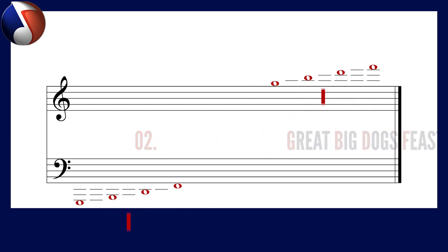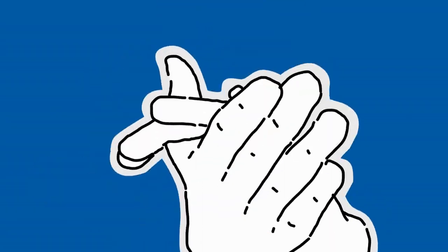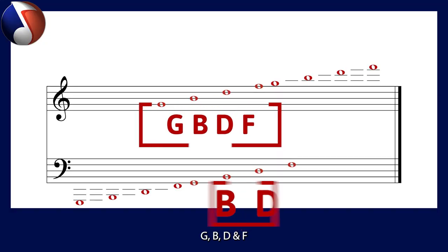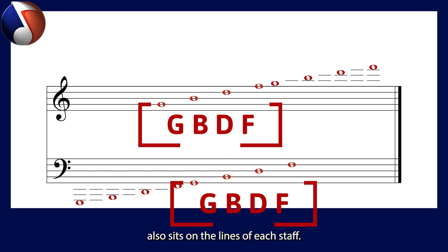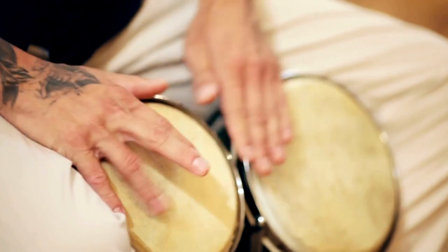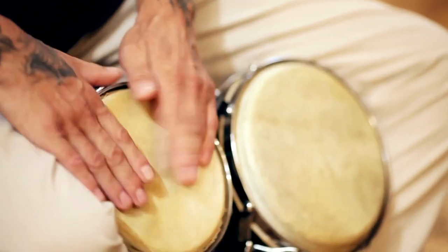Now here's a bonus tip — you're welcome. The same notes G, B, D and F also sit on the lines of each staff. It's always good to recognise patterns in music because these happen all the time.